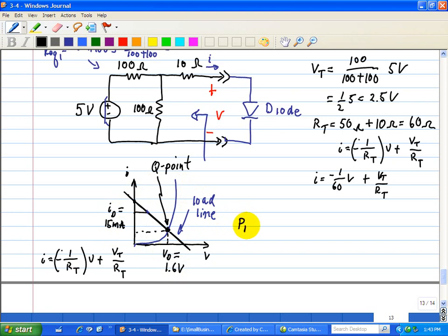Therefore, the power dissipated in the diode is just simply ID times Vd, which is equal to 15 times 10 to the minus 3, or 15 milliamps times 1.6.